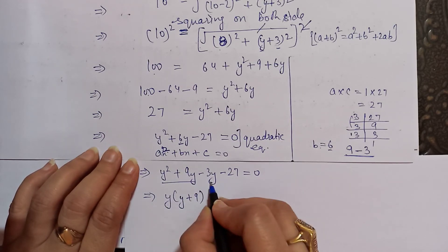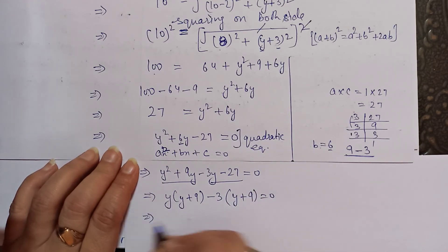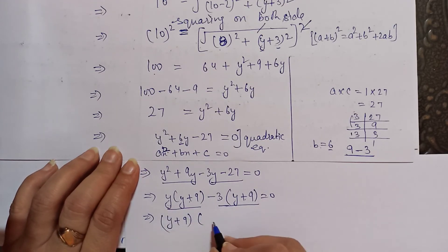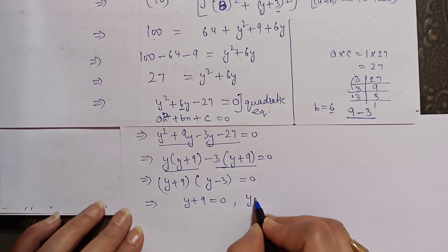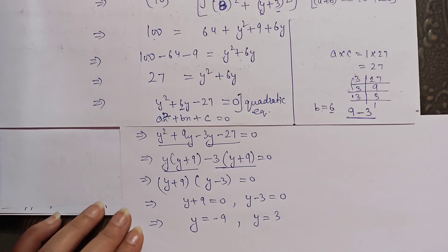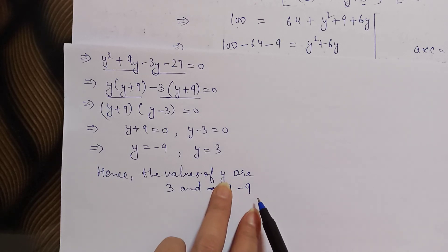y + 9 and minus 3 is common. So (y + 9)(y - 3) = 0. Now we equate each factor to zero: y + 9 = 0 gives y = -9, and y - 3 = 0 gives y = 3. So y has two values: y = 3 and y = -9. Thank you.